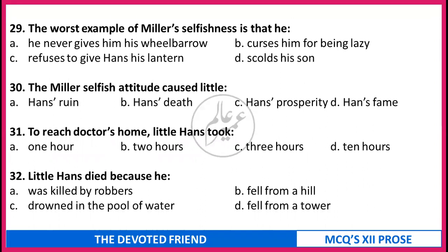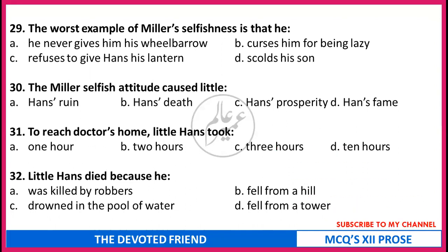The worst example of the Miller's selfishness is that he (a) never gives him his wheelbarrow, (b) curses him for being lazy, (c) refuses to give Hans his lantern, (d) scolds his son. The Miller's selfish attitude caused little Hans' (a) death, (b) prosperity, (c) fame. To reach the doctor's home, little Hans took (a) one hour, (b) two hours, (c) three hours, (d) ten hours. Little Hans died because he (a) was killed by robbers, (b) fell from a hill, (c) drowned in the pool of water, (d) fell from a tower. Correct answers: 29 - refuses to give Hans his lantern. 30 - Hans' death. 31 - three hours. 32 - drowned in the pool of water.